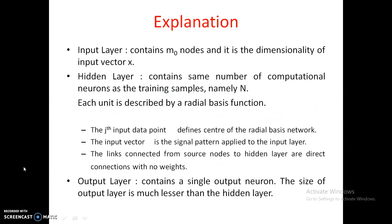The input layer contains m0 nodes, corresponding to the dimensionality of the input vector x. The hidden layer contains the same number of computational neurons as the training samples, namely capital N. However many training samples are given to the network, that many computational neurons are present in the hidden layer. Each unit in the hidden layer is described by a radial basis function.